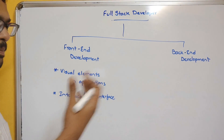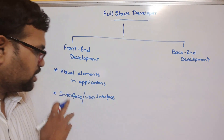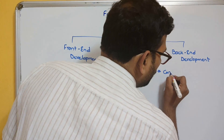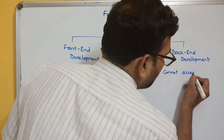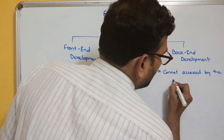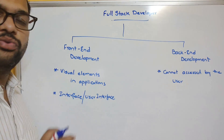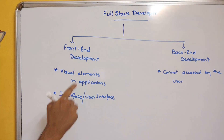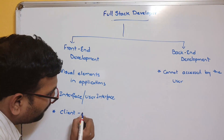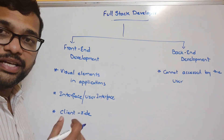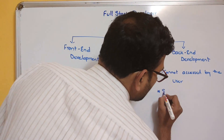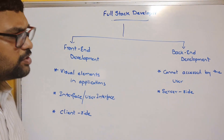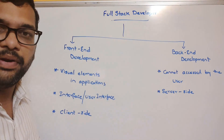It's called a user interface because the application will be used by the user. Coming to the back-end, the elements that cannot be accessed by the user are developed in back-end development. The front-end is also called client-side application or client-side development, while the back-end is called server-side application or server-side development. That's the difference between front-end and back-end development.